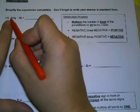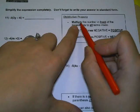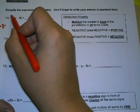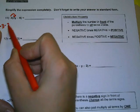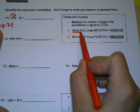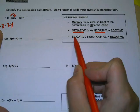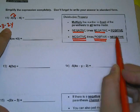You take the number that's right next to the parenthesis and multiply that number — so in this case negative 3 — and multiply it to each term inside the parenthesis. So we're going to have negative 3 times 2y. Since we're multiplying, we have to remember that a negative times a negative is a positive, and a negative times a positive term is a negative.